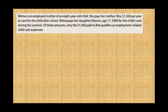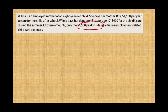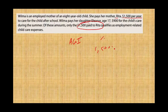Wilma is an employed mother with an eight-year-old son. She pays her mother Rita $1,500 per year to take care of her child after school. She also pays her daughter Eleanor, age 17, $900 for child care during the summer. Of these amounts, only the payment to her mother is eligible, since Eleanor is under age 19. To find the credit, find Wilma's AGI, find the appropriate percentage, then multiply $1,500 by that percentage.